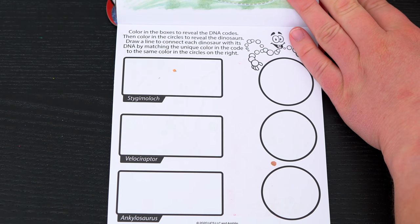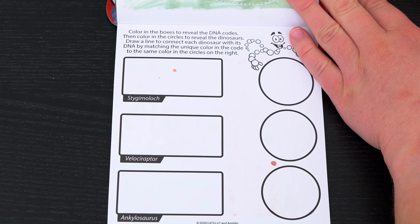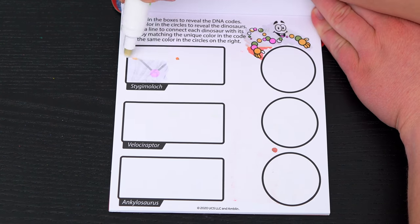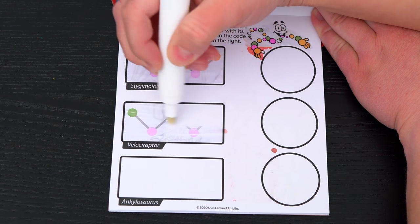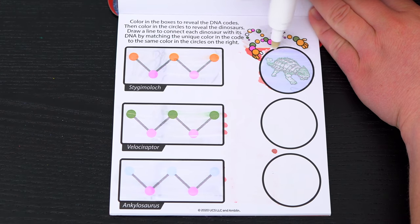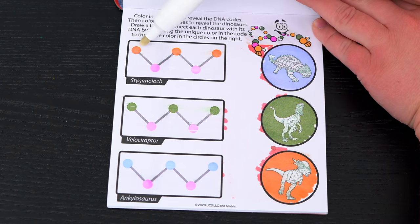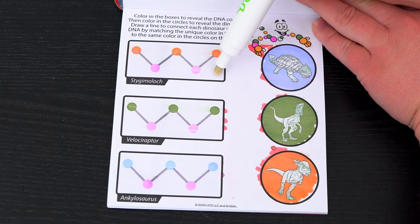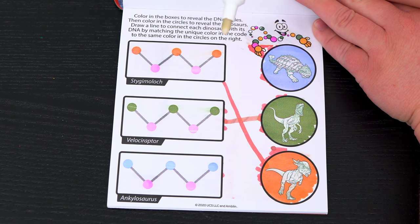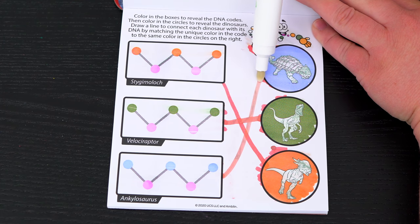Color in the boxes to reveal the DNA codes! Then color in the circles to reveal the dinosaurs! Draw a line to connect each dinosaur with its DNA by matching the unique color in the code to the same color in the circles on the right! Okay, so the Stigy Mylock DNA matches with this dinosaur down here! And the Velociraptor matches with this green dinosaur! And the Ankylosaurus is up here! Yay!